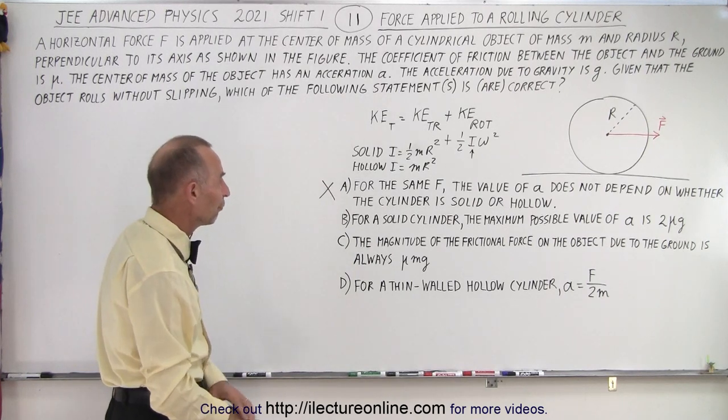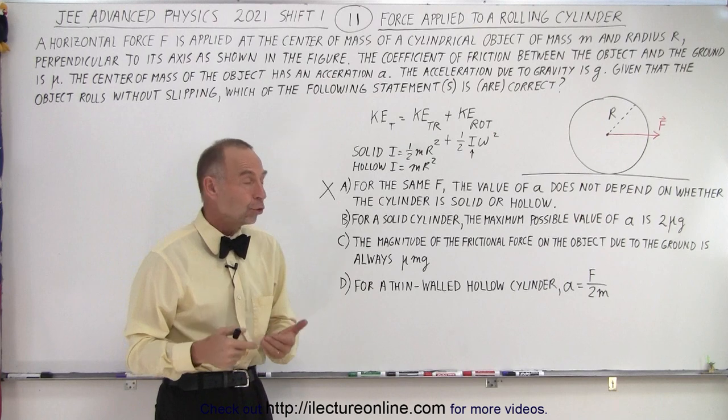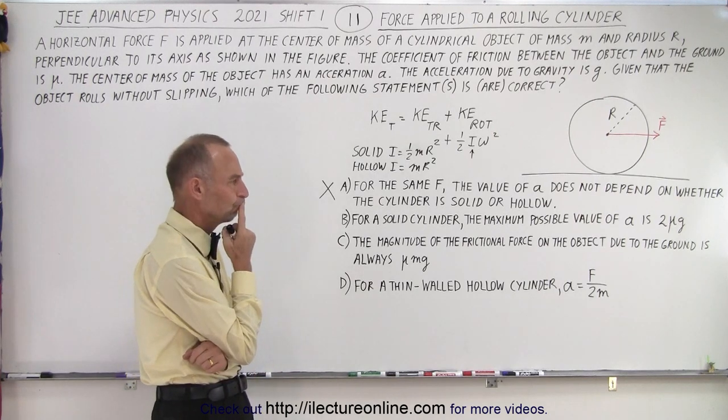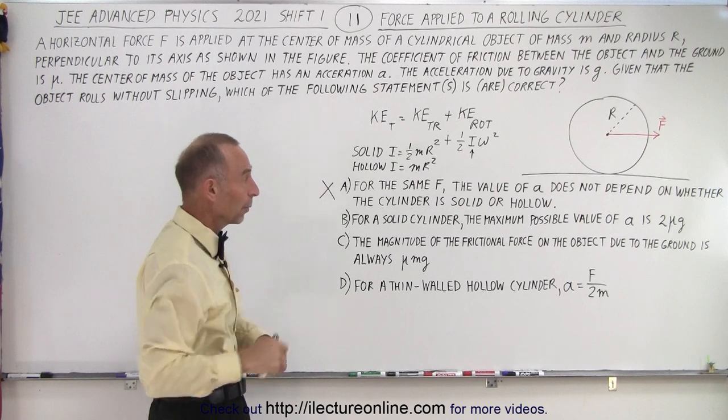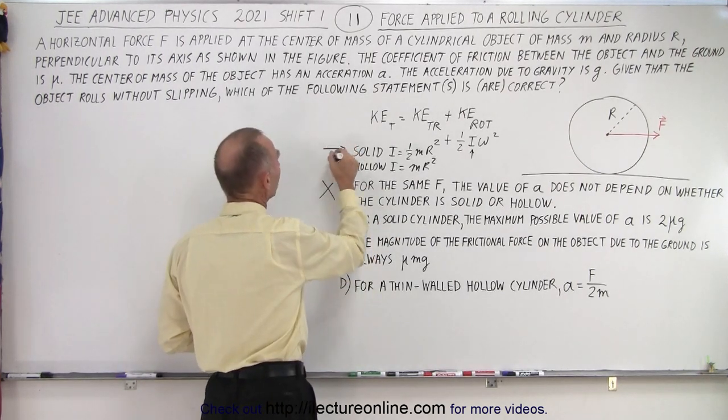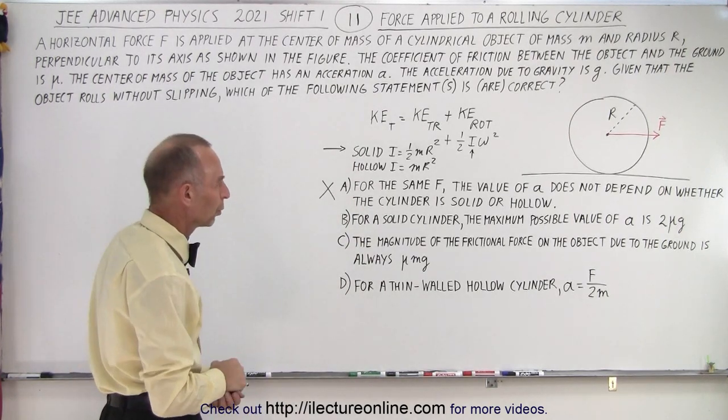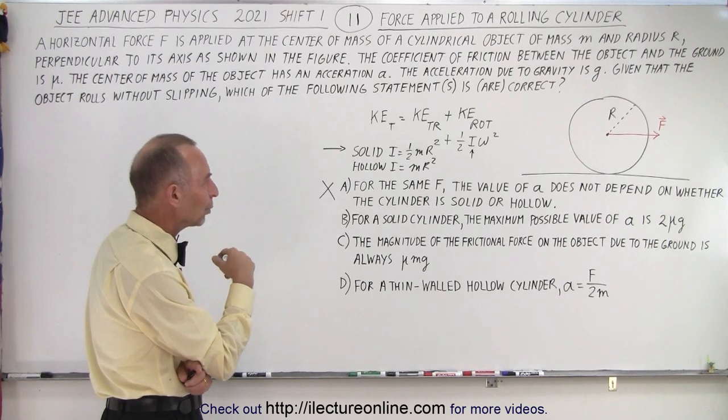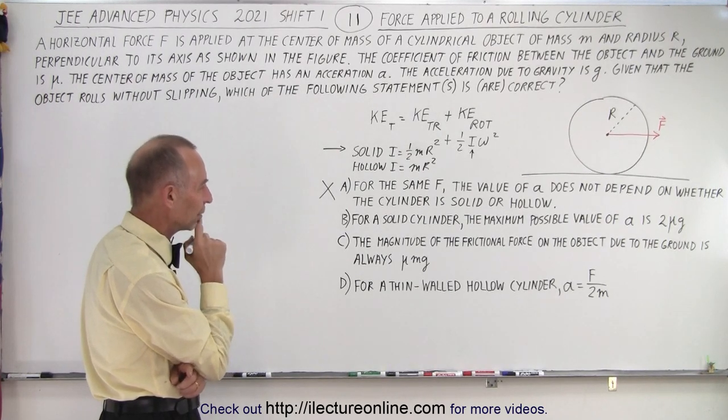Alright, what about B? For a solid cylinder, the maximum possible value of A is 2 mu times G. Hmm. So how do we figure that out? Well, it's a solid cylinder. So for a solid cylinder, we're dealing with I equals one half MR squared. But does that play a role? Well, let's take a look. So how do we calculate the acceleration for a solid cylinder?